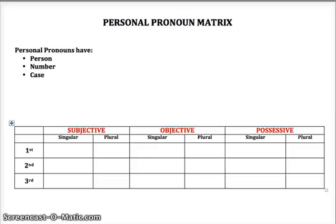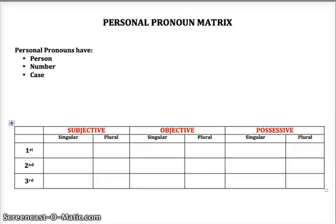So personal pronouns — they have three characteristics. The first characteristic is that they have person. You know that from reading literature; very often when you discuss a work of literature, one of the first things talked about is the perspective or point of view the literature takes, and it's either written in first person or third person point of view. You know which point of view it's written in by the pronouns that are used.